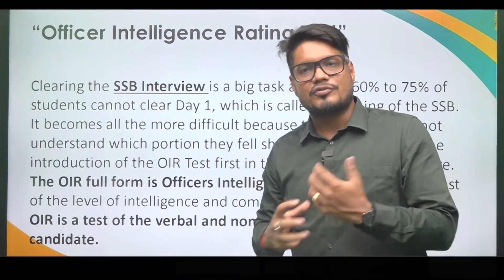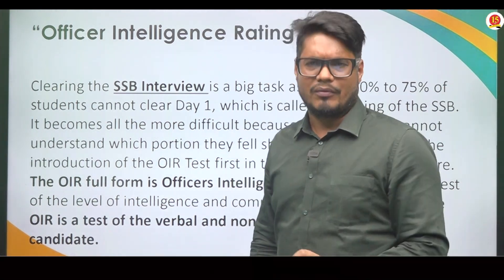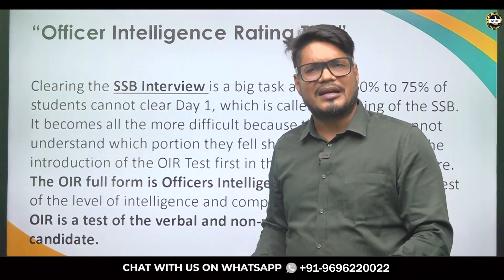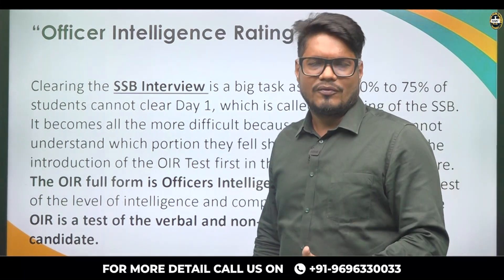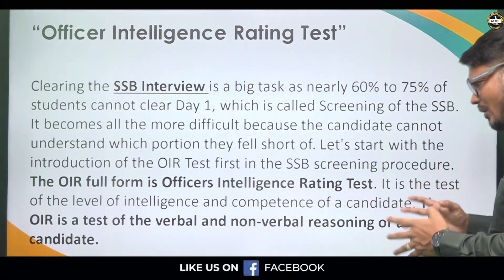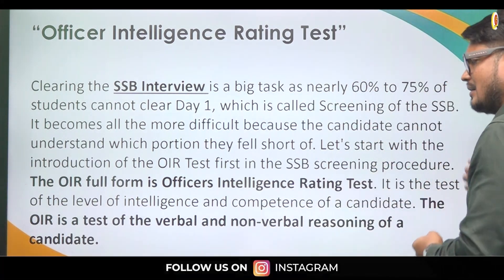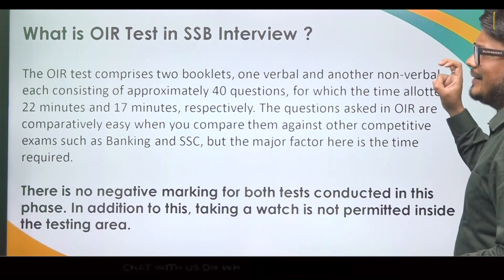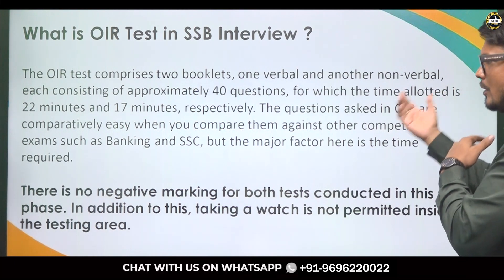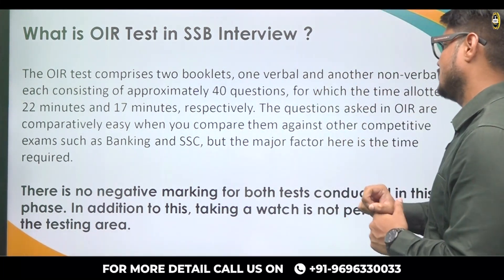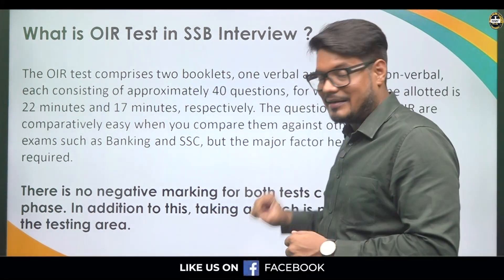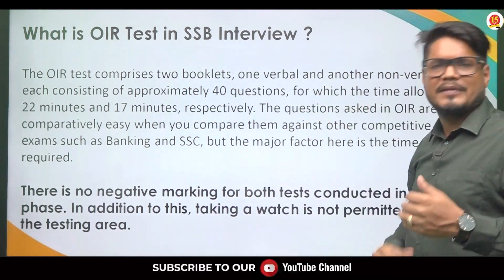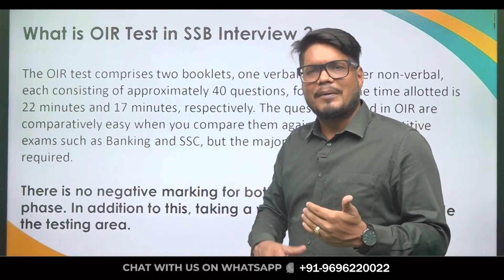It is very important that you have a better IQ, because without it you will not do the best in the SSB testing procedure. The first parameter of screening decides whether the candidate will be capable or not. The OIR test is a test of verbal and non-verbal reasoning. It comprises two booklets — one verbal and one non-verbal — each consisting of approximately 40 questions, with time allotted of 22 minutes and 17 minutes respectively.